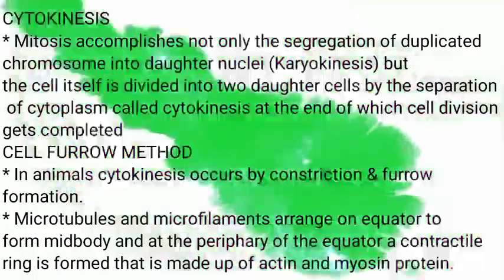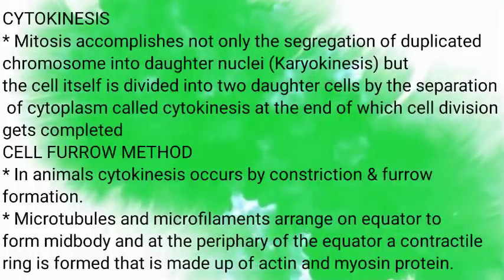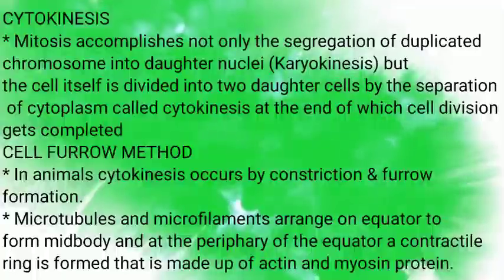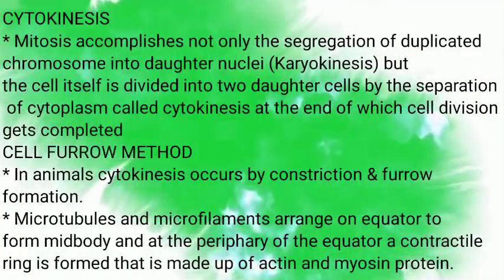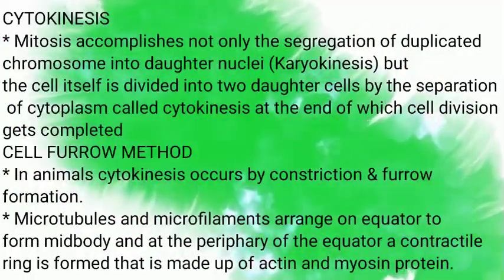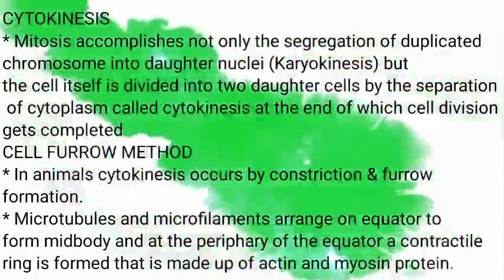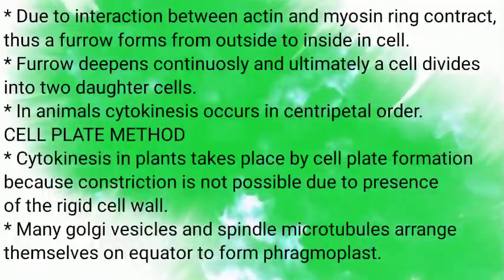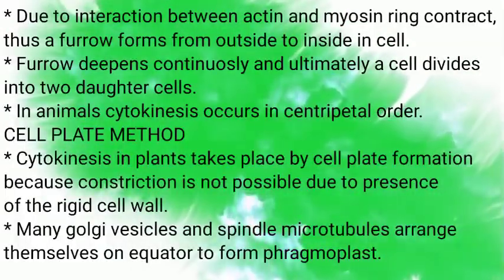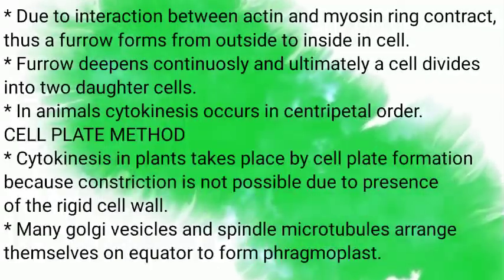In animal cells, cytokinesis occurs by constriction and furrow formation. Microtubules and microfilaments arrange on the equator to form a midbody, and at the periphery of the equator a contractile ring is formed, made up of actin and myosin proteins. Due to interaction between actin and myosin, a furrow forms from outside to inside the cell. The furrow deepens continuously and ultimately the cell divides into two daughter cells. In animals, cytokinesis occurs in a centripetal manner.